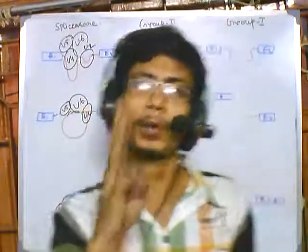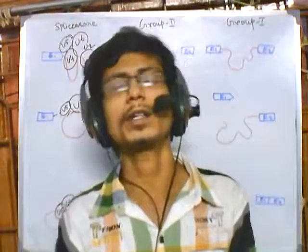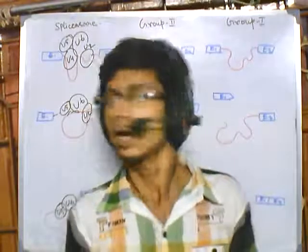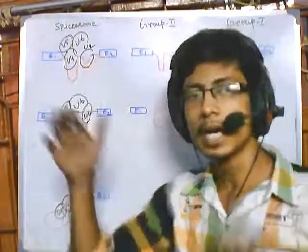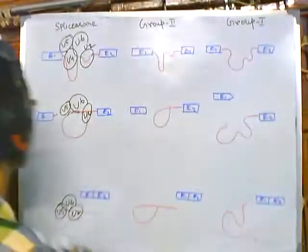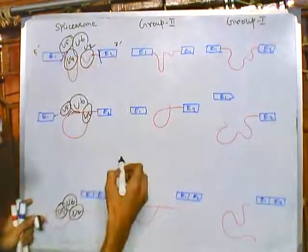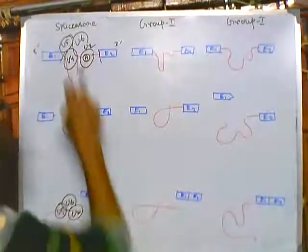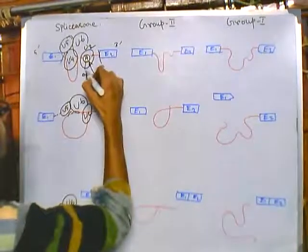In any kind of splicing there are three important things: there must be close arrangement — bringing into close proximity — of three points. One is the 5' splicing site, another is the 3' splicing site, and the third is the branch point. In this picture, this is the 5' splicing site, this is the 3' splicing site, and this is where an adenine residue is present — this is the branch point.